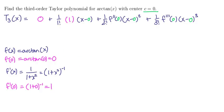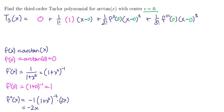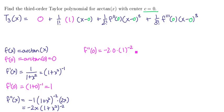Next, let's take a look at the second derivative. Using the chain rule we're going to have negative 1 times 1 plus x squared to the minus 2 times the derivative of the inside which is 2x, or negative 2x times 1 plus x squared to the minus 2. Now if we plug in 0 we get f double prime at 0 is equal to negative 2 times 0 times 1 plus 0 to the negative 2, and that's just going to be 0. And that's this coefficient here.